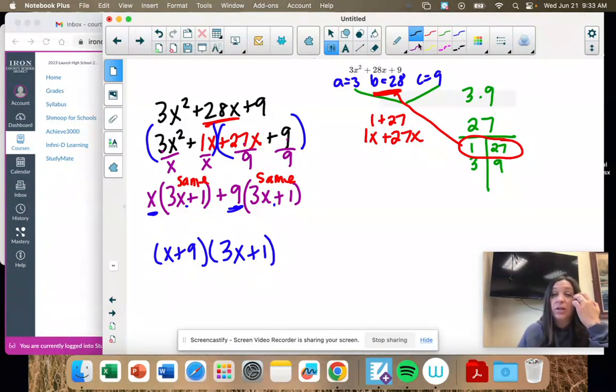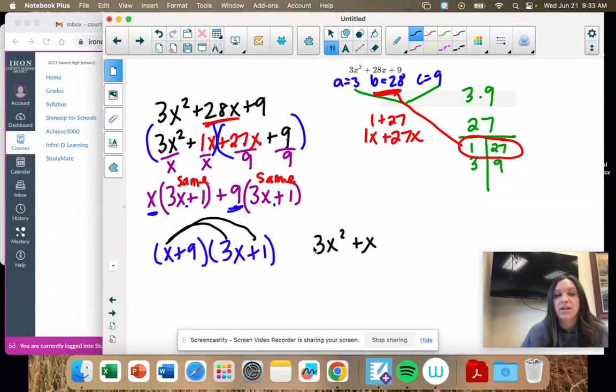So if you want to check your work on these, you can. That's the guess and check method. So X times 3X is 3X squared. X times 1 is X. 9 times 3X is 27X. 9 times 1 is 9. And look,